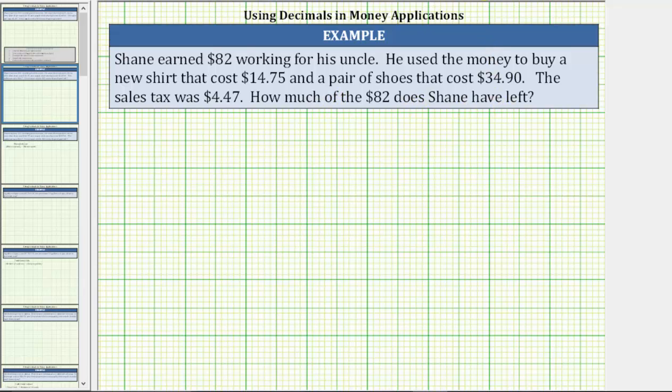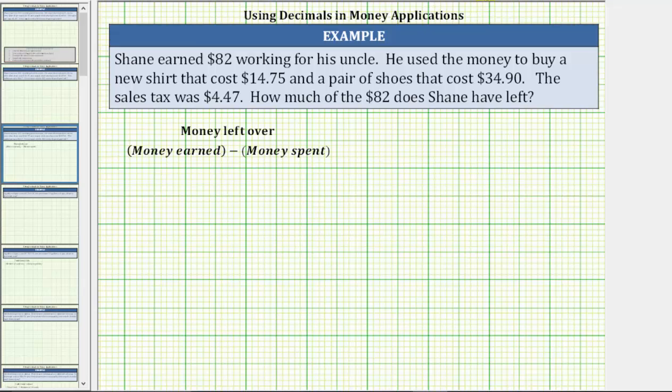To determine the amount of money Shane has left, we take the money earned and subtract the money spent. Because Shane earned $82, we have the expression 82 minus the money spent, which is going to be the sum of $14.75, $34.90, and $4.47.